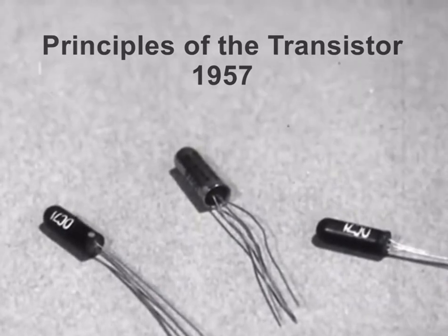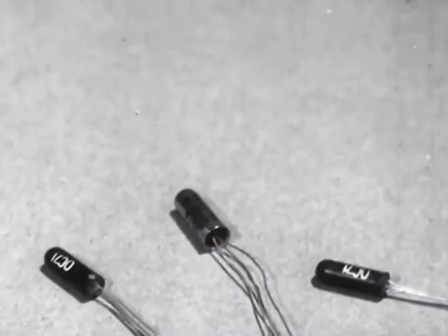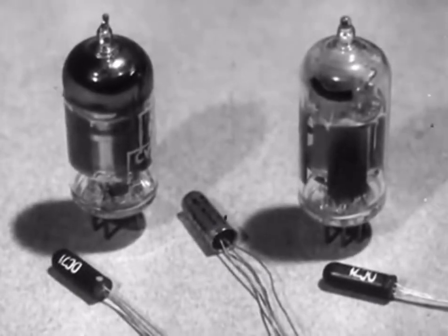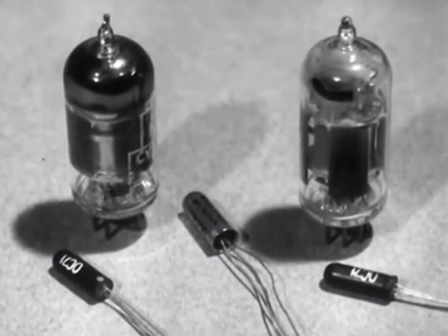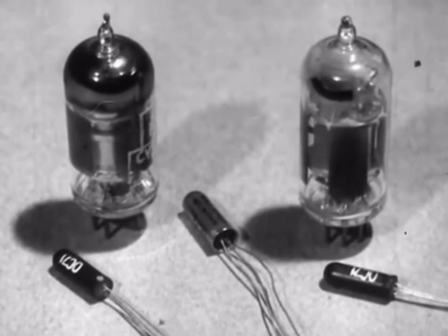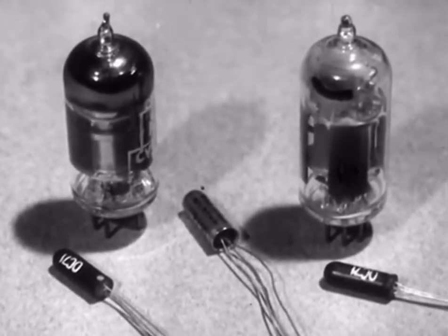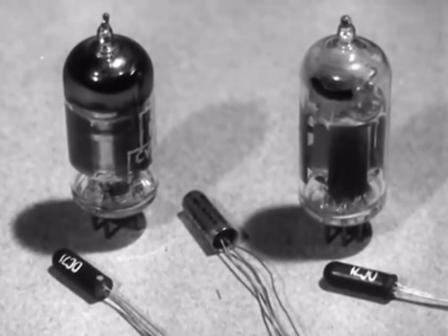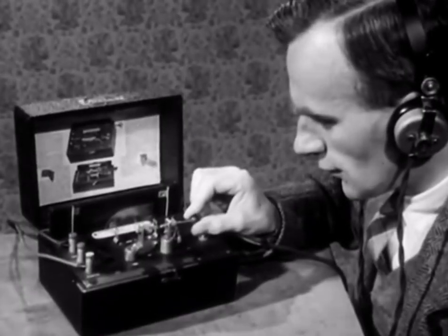Transistors have much the same function as radio valves, but they have the advantage of being very much smaller and they work with very low voltages. Transistors were invented in 1948, but their origin dates back to the early days of broadcasting when radio receivers looked something like this.